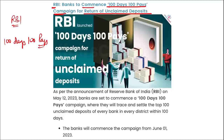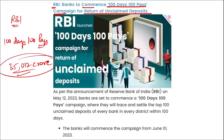Unclaimed deposits are money in savings or current accounts that have not been operated for more than 10 years. As per RBI data, the total amount of unclaimed deposits transferred to RBI by public sector banks — for deposits not operated for more than 10 years — was almost ₹35,012 crore. This amount was transferred to the Bank Depositor Education and Awareness Fund maintained by RBI, and will now be distributed back. This is the 100 days, 100 pays campaign launched by RBI.